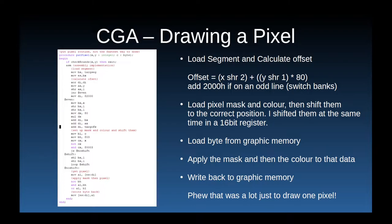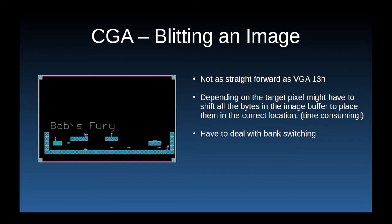Drawing one pixel at a time would be slow. For bitmap graphics it's much better to draw blocks of pixels at a time. Drawing a block of image data isn't as easy as it was for VGA — much like drawing a single pixel, we may have to start the image data partway through a byte, requiring image data for each row to be shifted. The start and end bytes will also have data that needs to be preserved. There is also a need to deal with bank switching, as only half of the rows will be drawn in each bank.